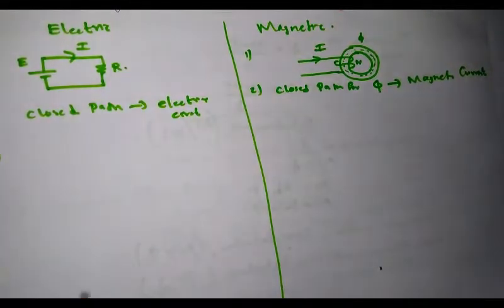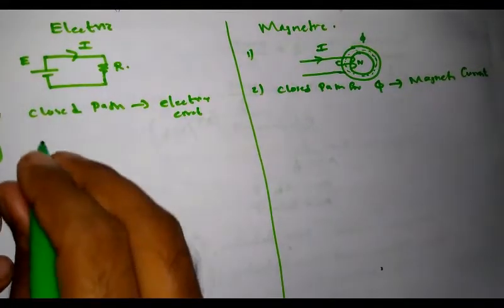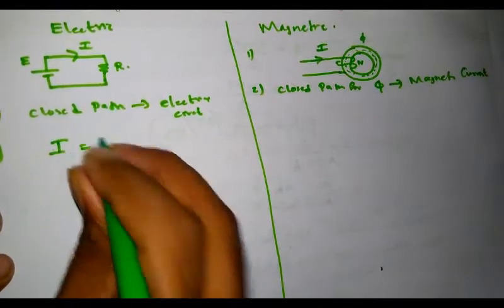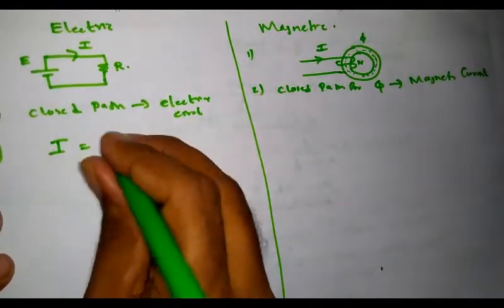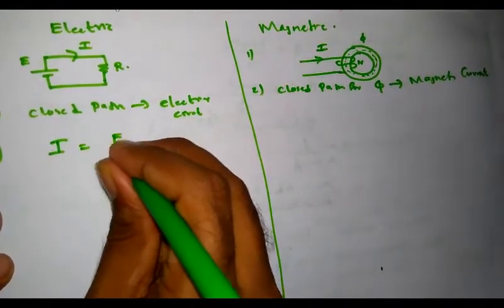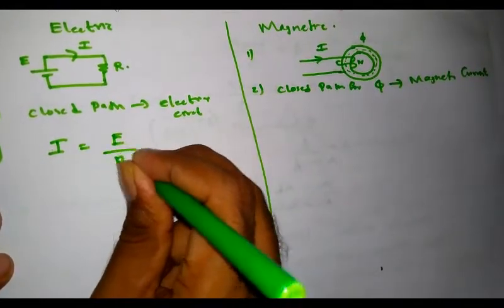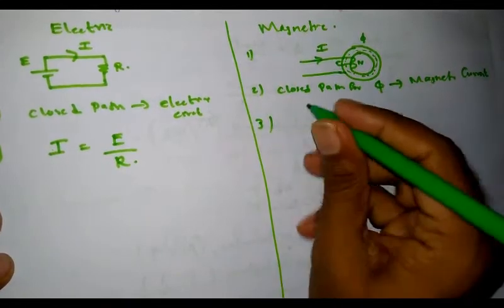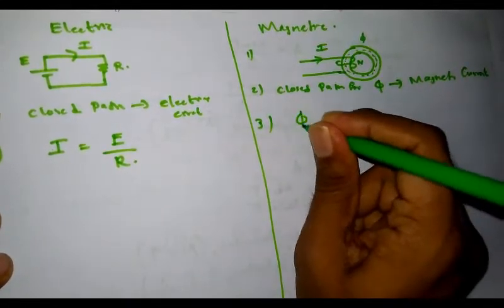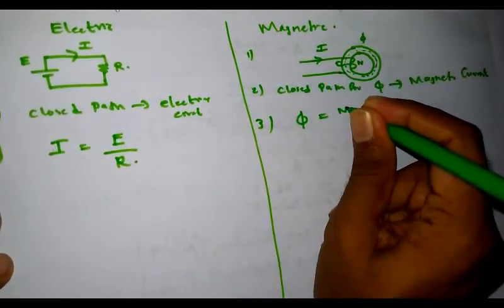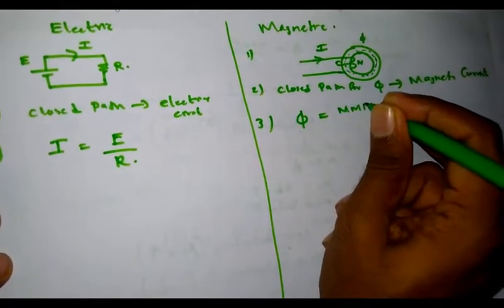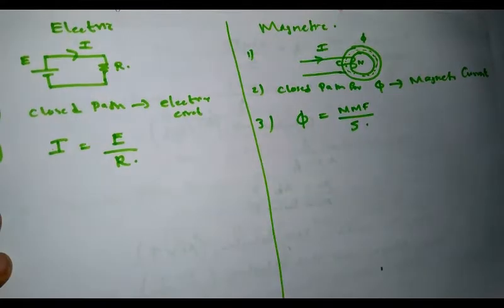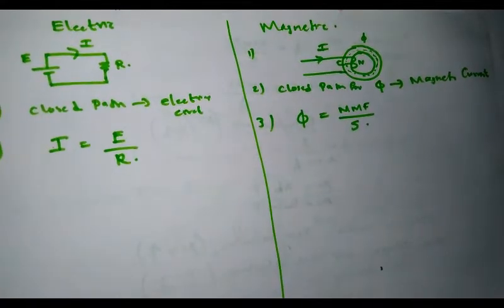The next important comparison is the basic equation. In an electric circuit, from Ohm's law, current I is equal to EMF divided by resistance. Similarly, in a magnetic circuit, flux phi is equal to MMF divided by reluctance.